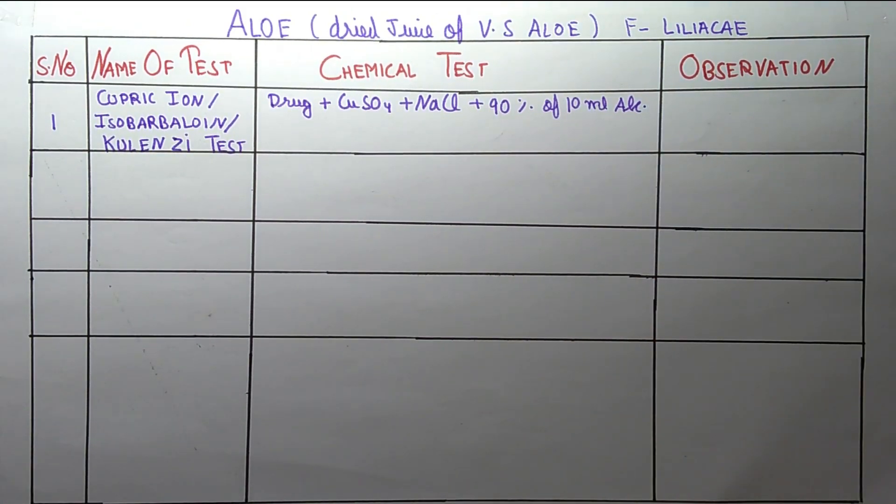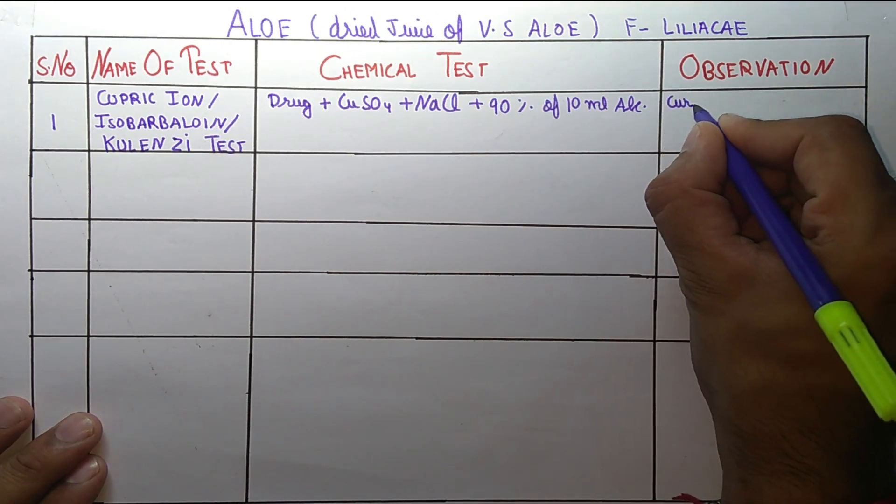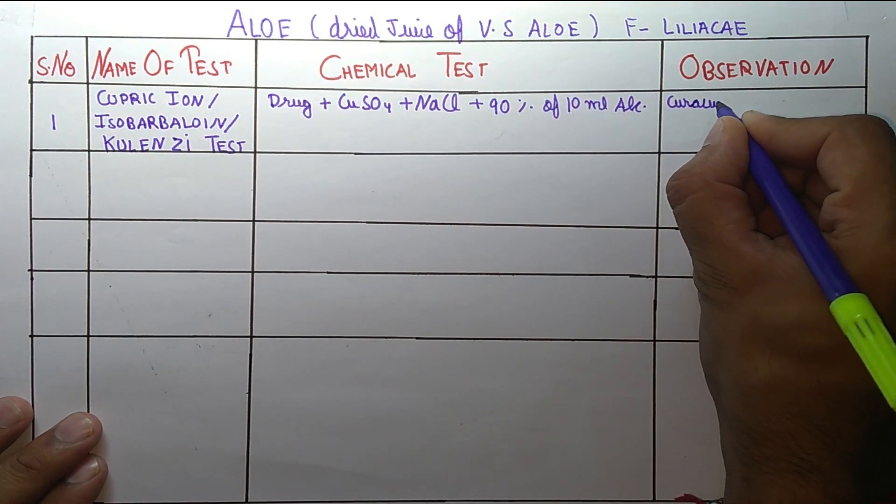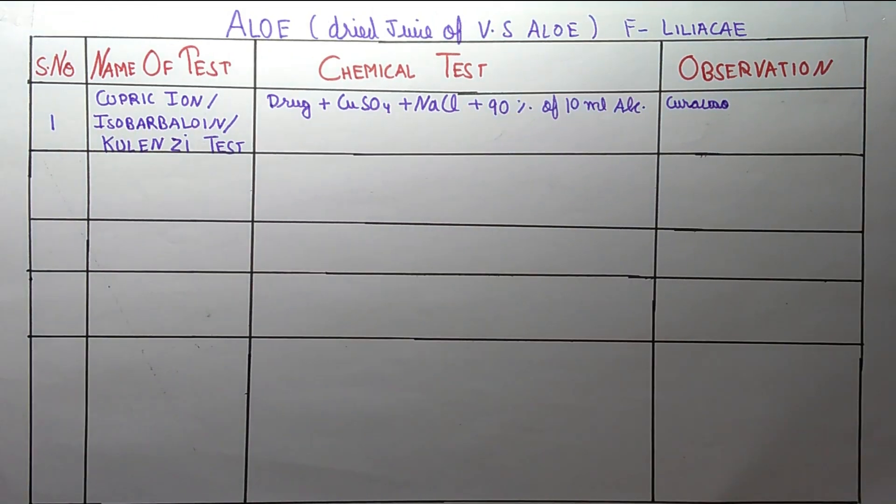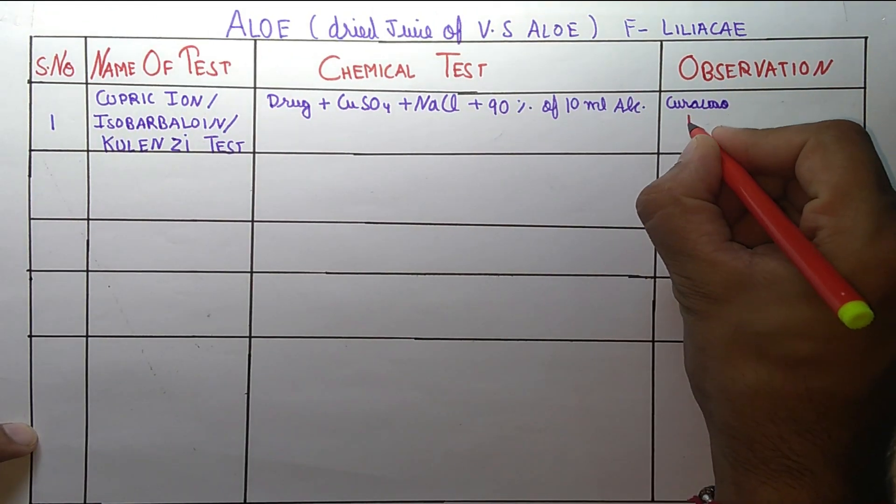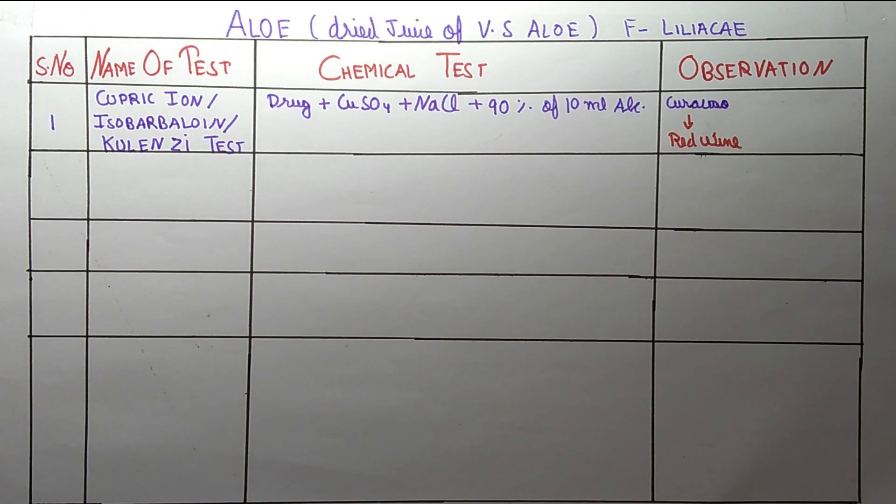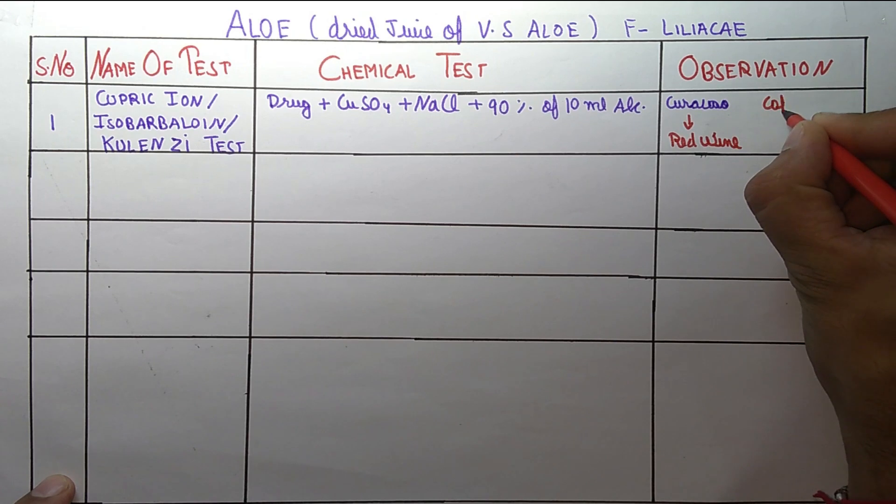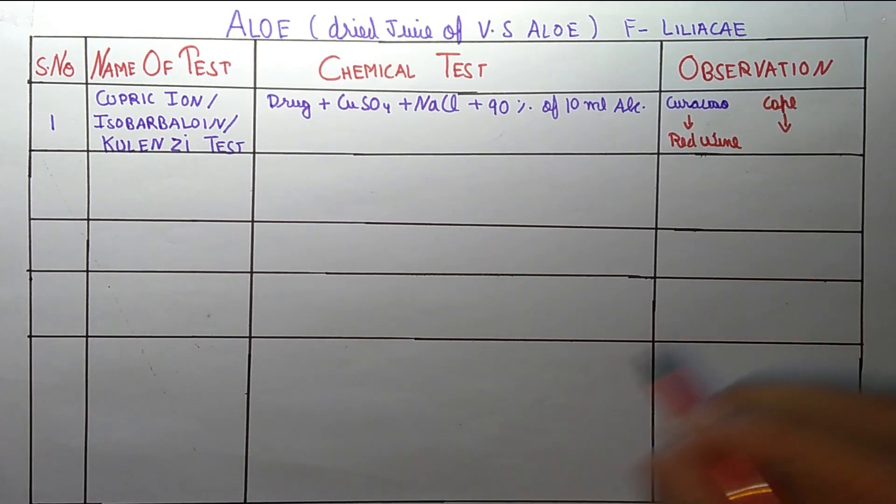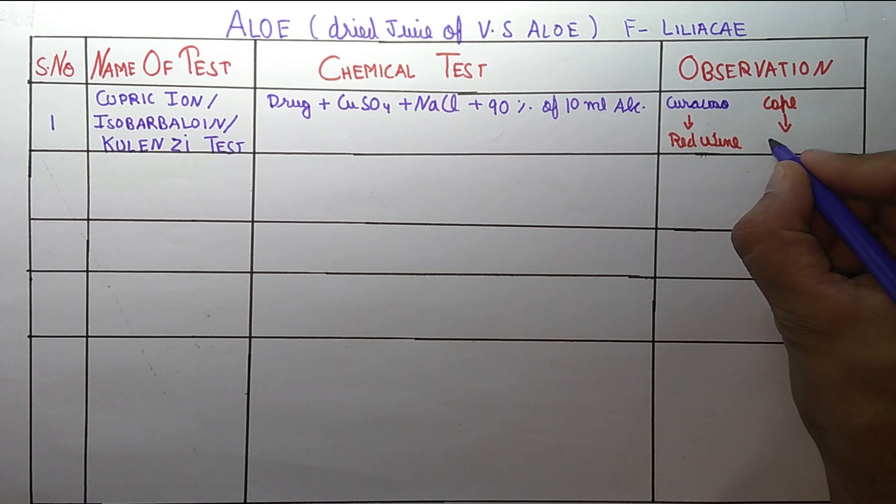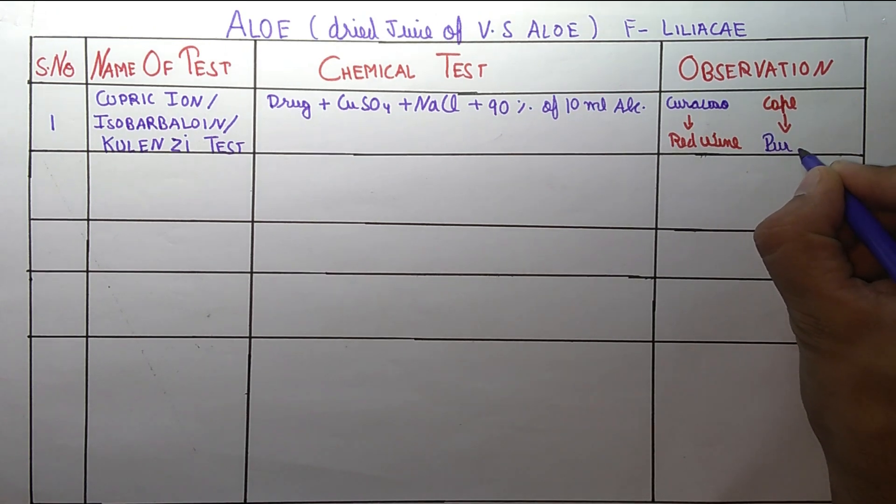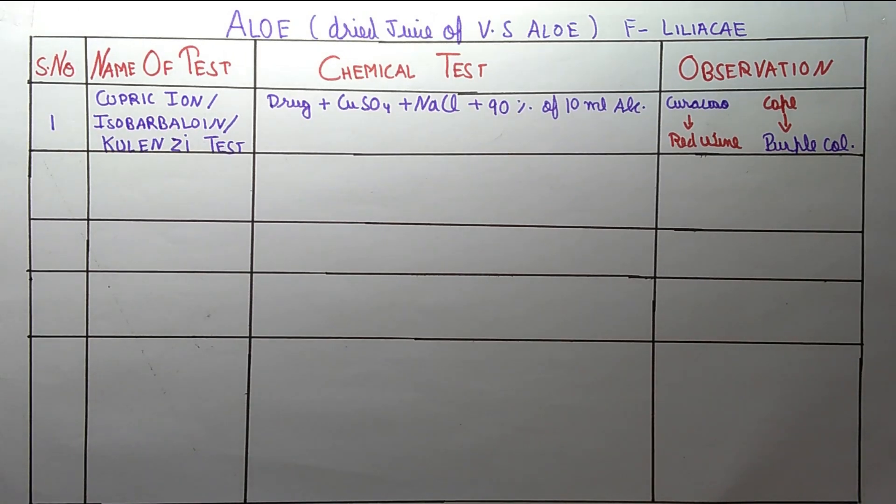What will be the observation? Curacao variety gives red wine color, where Cape variety gives the purple color. I hope students this test is clear.